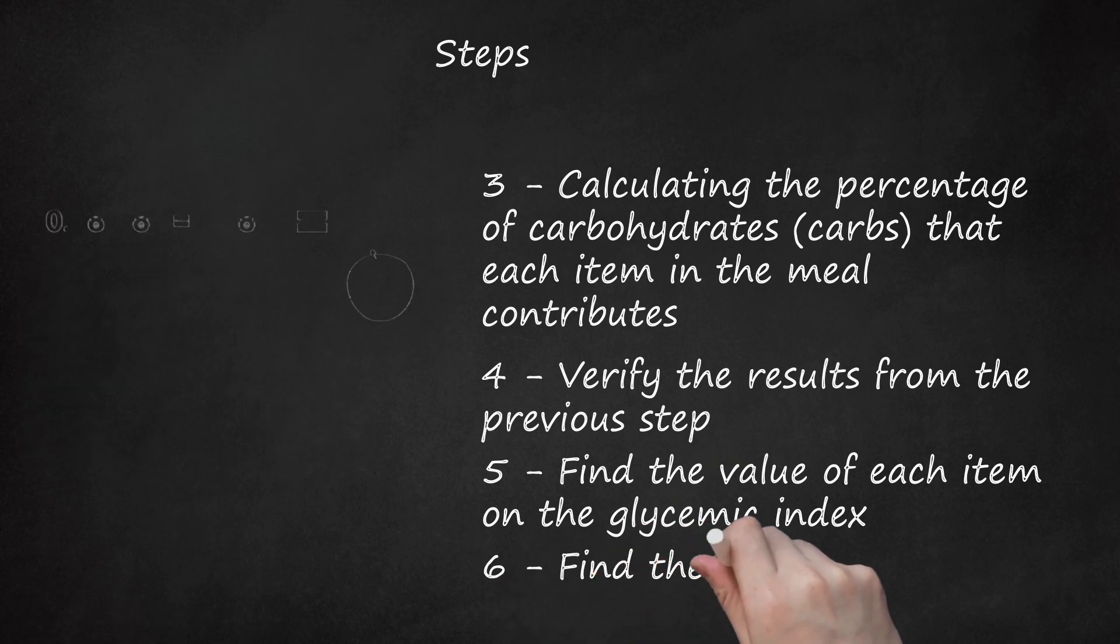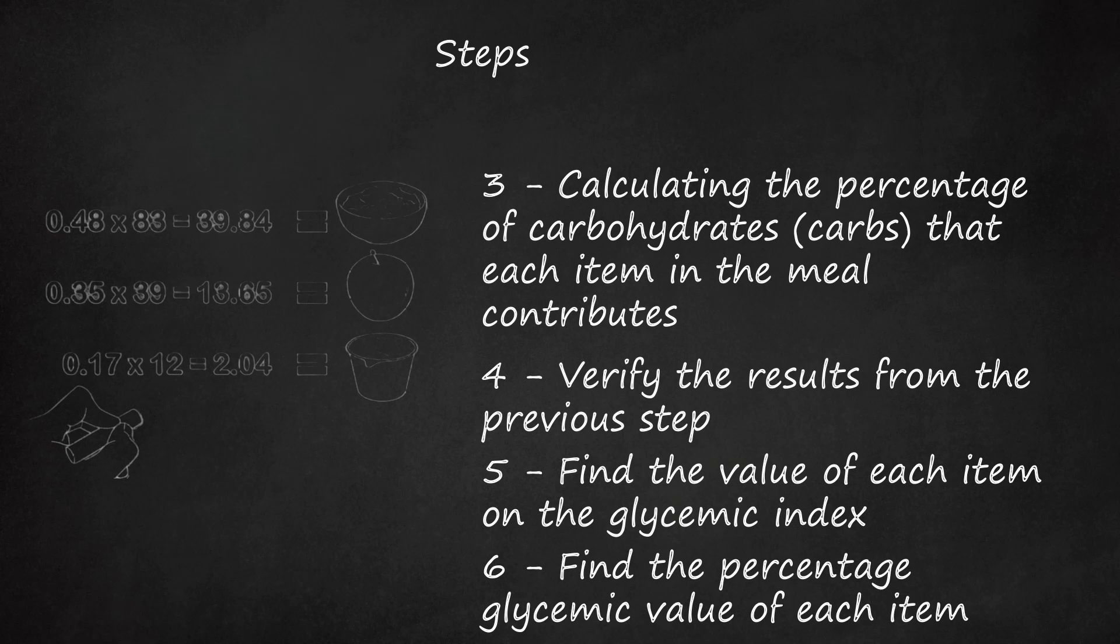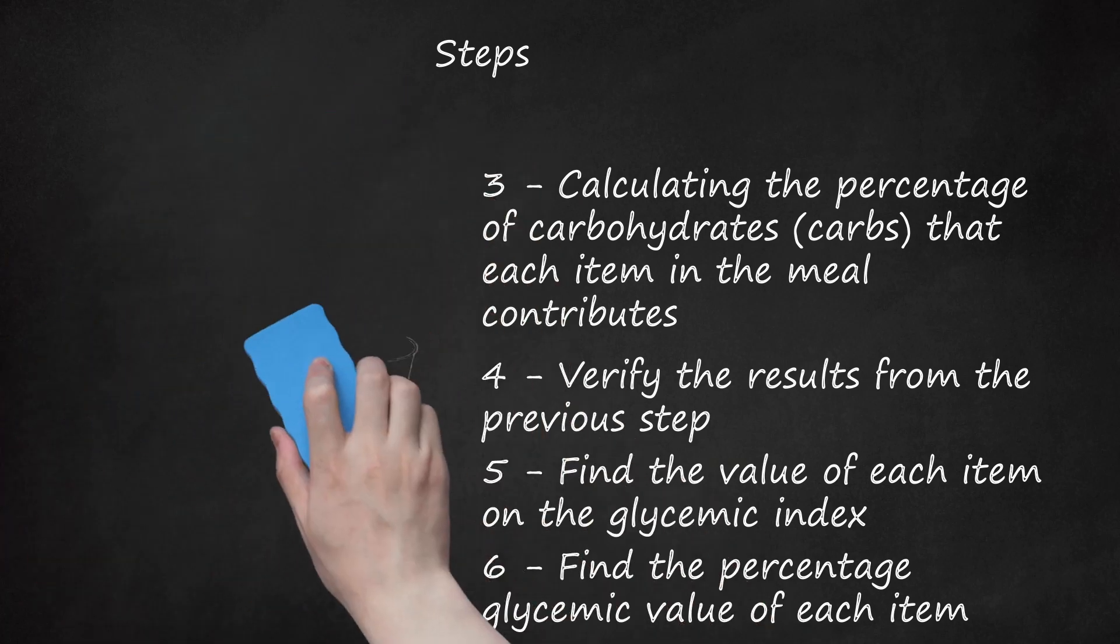Step 6: Find the percentage glycemic value of each item. Take the percentage we calculated in step 3 for each item and multiply it by the GI value of that item. Example: Oatmeal: 0.48 times 83 equals 39.84. Apple: 0.35 times 39 equals 13.65. Yogurt: 0.17 times 12 equals 2.04.